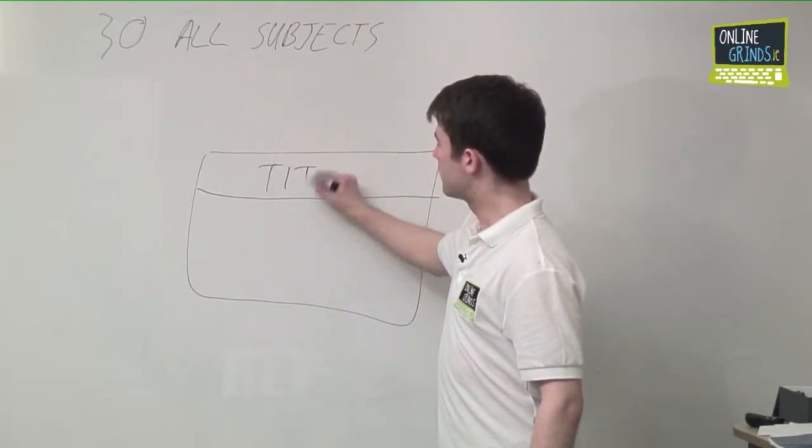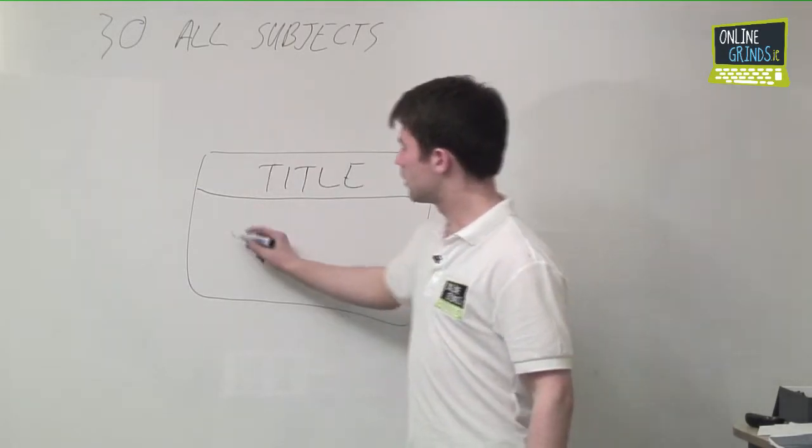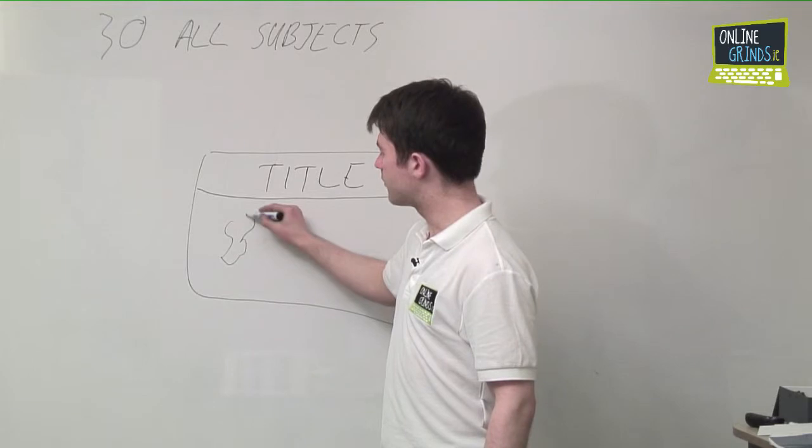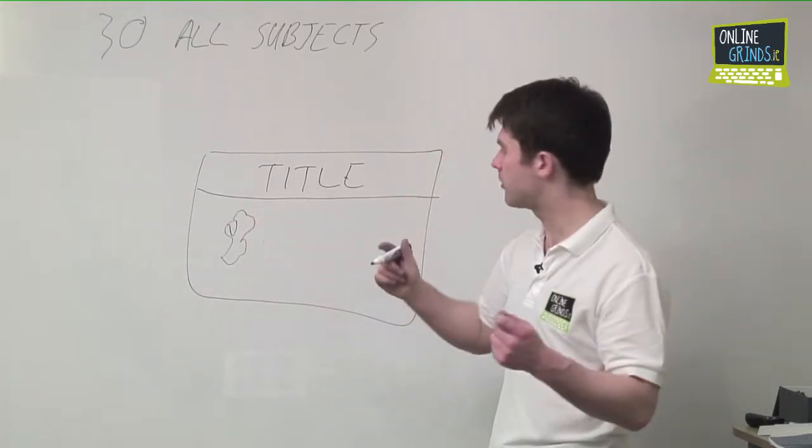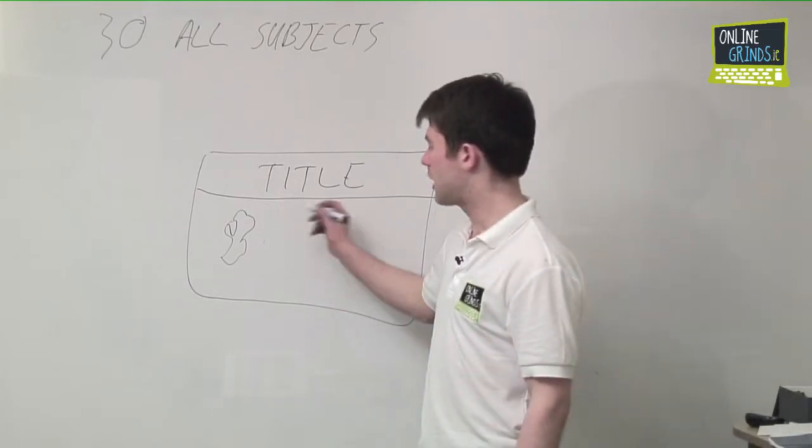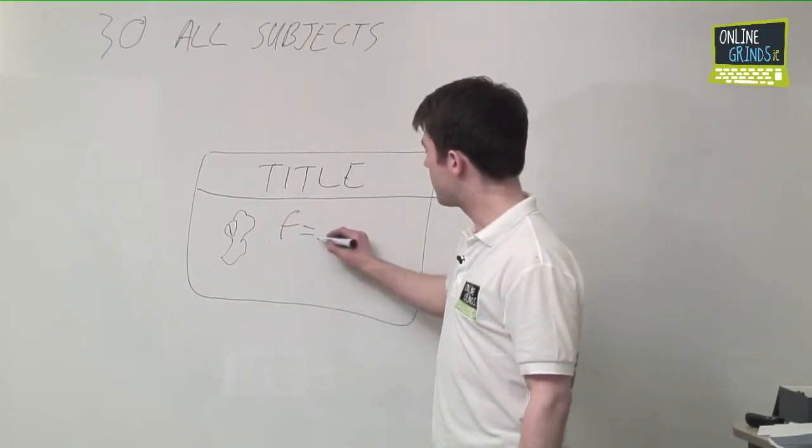So, on your record card, you'd have your title, you'd have a little diagram of your setup, doesn't have to be pretty, it's just so you can check did I remember all the important bits. You'd have your units, you'd have your equation that you'd have to remember.